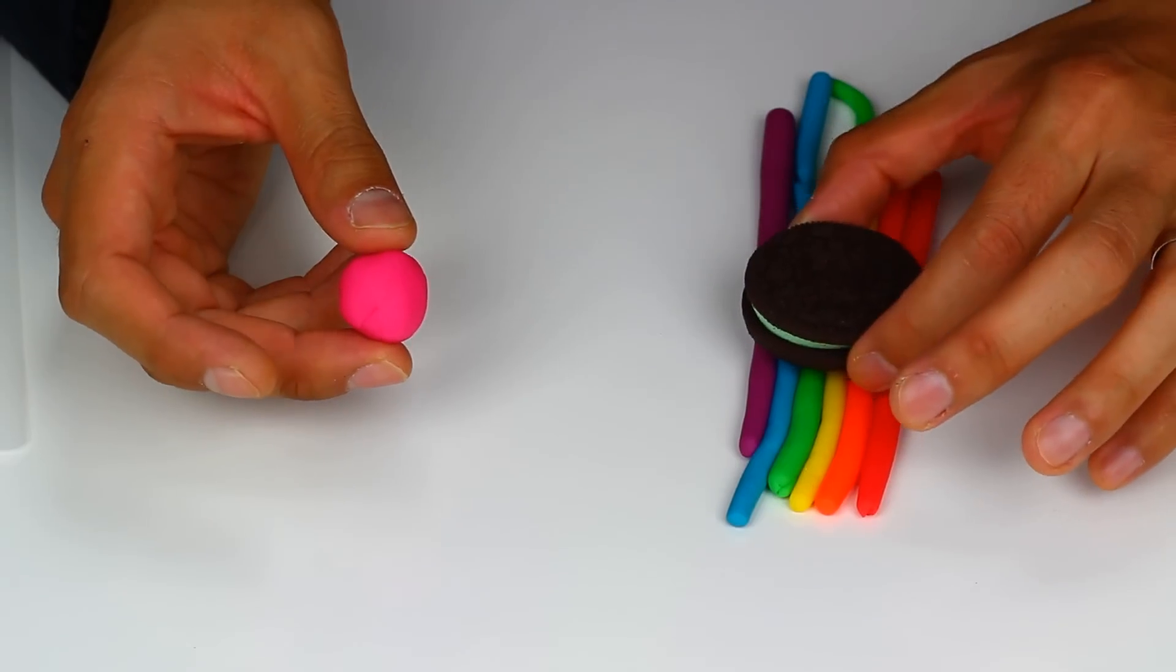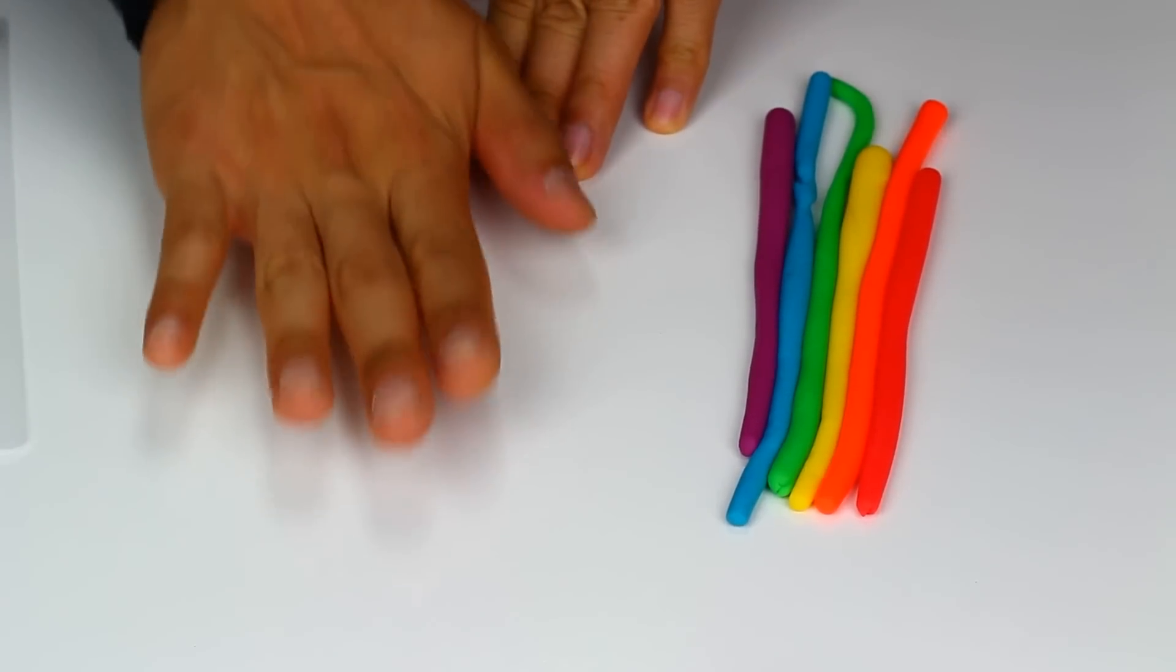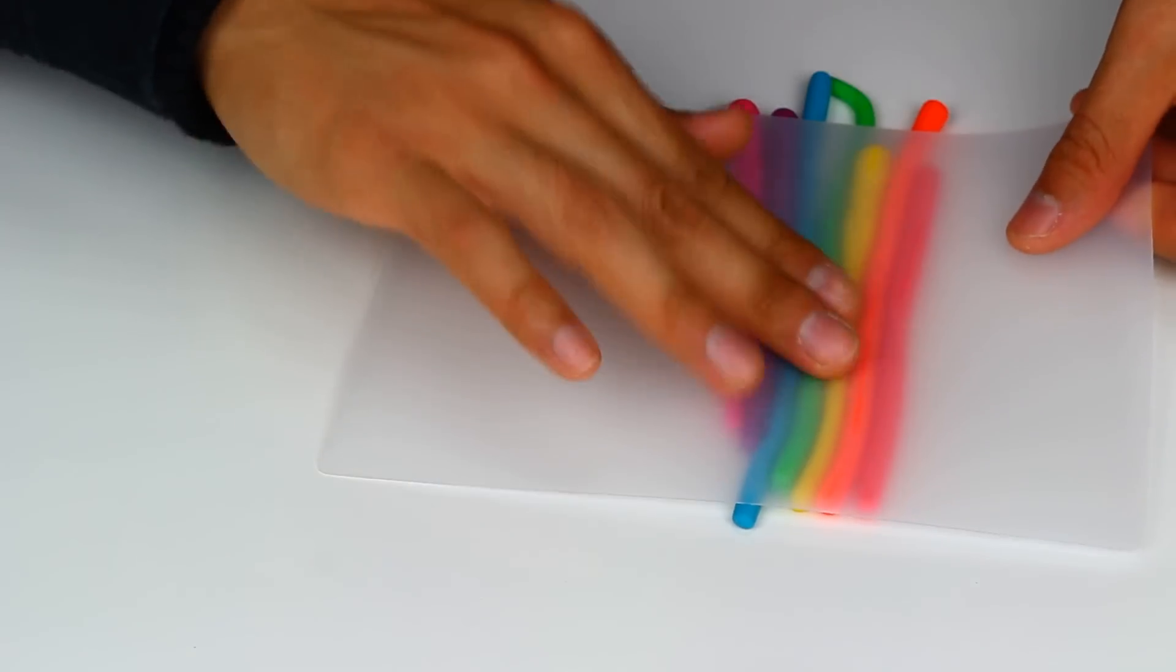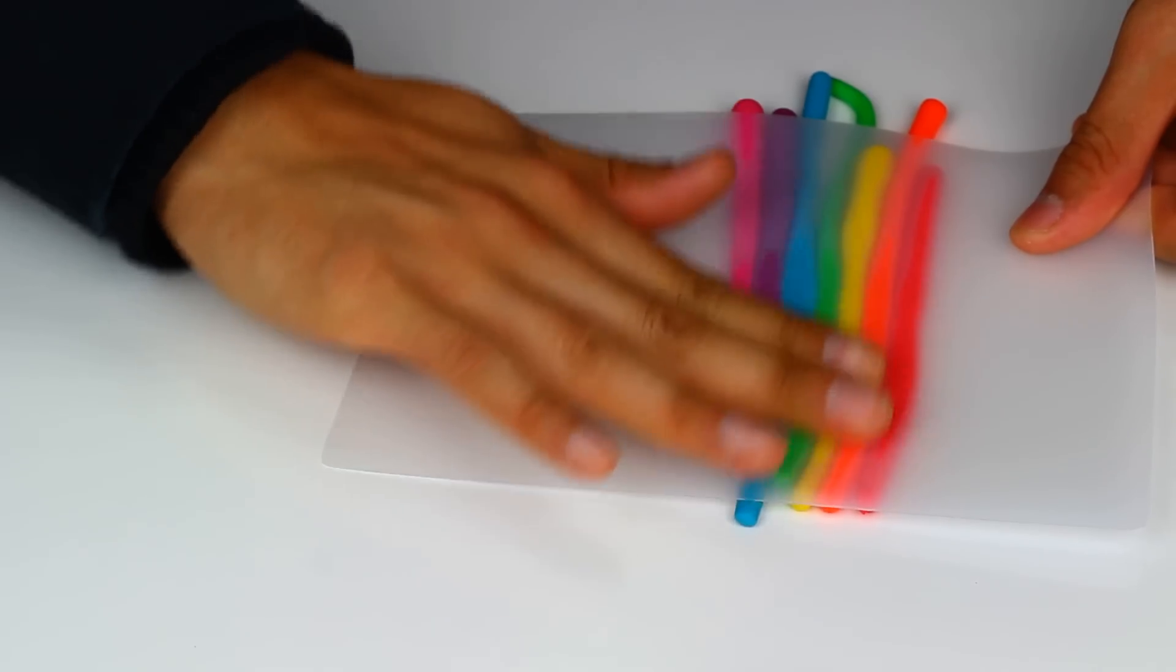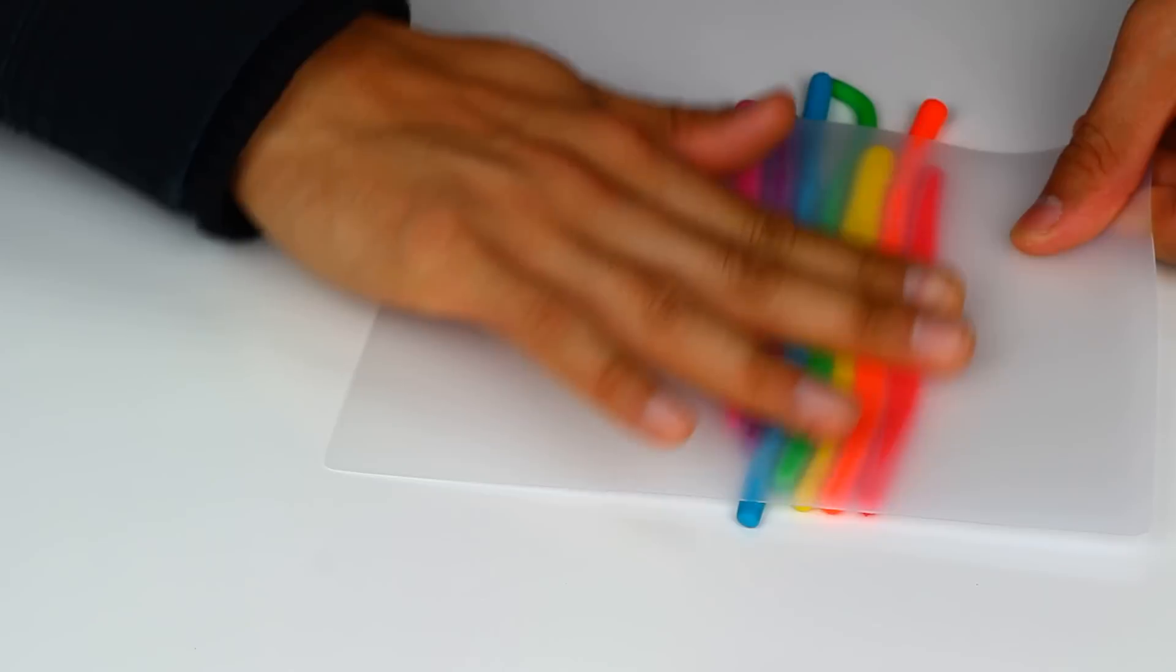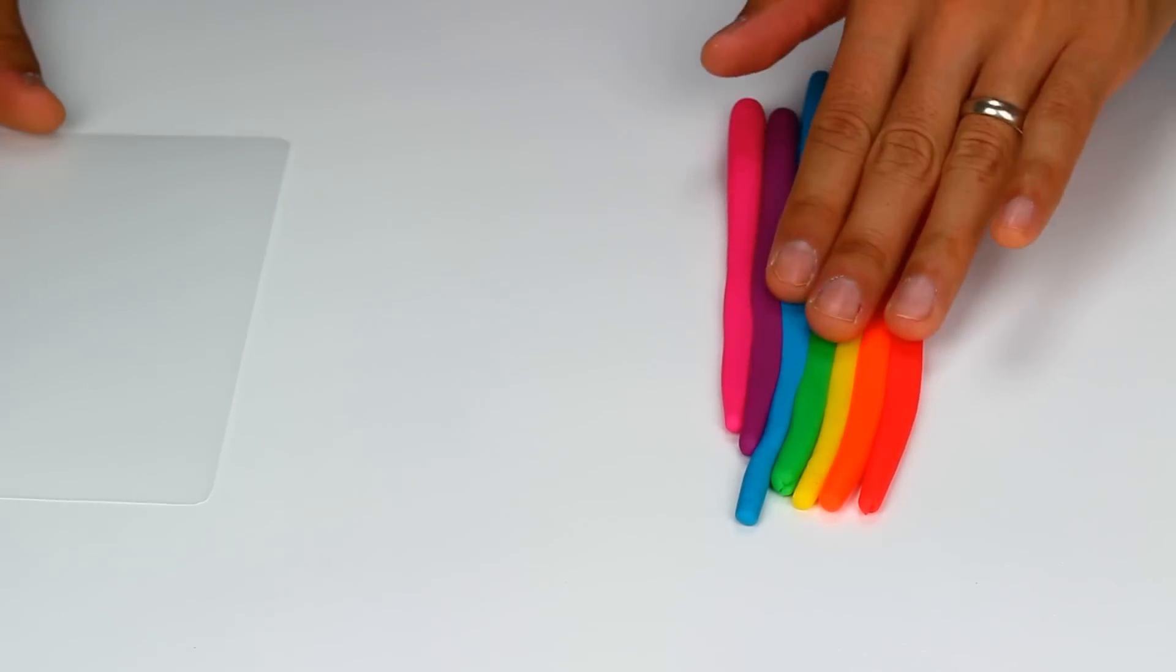And I was going to add pink if it's too small. It is a little too small so I'm going to add pink. I'm going to just flatten this out a little. Okay, so that's pretty nice and flat.